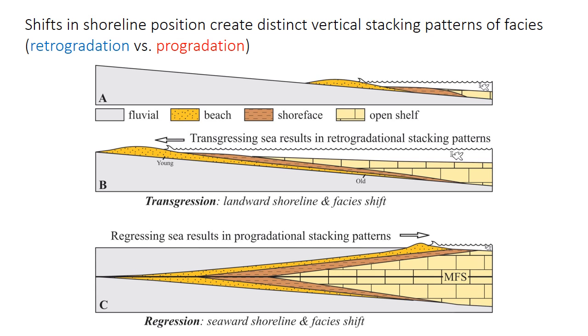Progradation, as you've already encountered, is the building of facies away from the source. So in a coastal setting, it results from regression of the shoreline, and is marked by a vertical succession from more distal, or more offshore facies at the base, to more proximal, or more shallow water, or even terrestrial facies at the top.